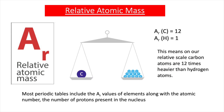Another way of looking at this is shown here in the diagram. Carbon has an AR value of 12 and hydrogen has an AR value of 1. So on our relative scale, carbon atoms are 12 times heavier than hydrogen atoms. You can see on this diagram we represent this with 12 hydrogen atoms having the same mass as one carbon atom.